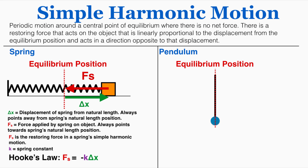In a previous video on elastic potential energy I talked about Hooke's law — I'll link that other video in the description. When describing a spring, delta x is the displacement of the spring from its equilibrium position, and Fs is the force applied by the spring on the object. In the Hooke's law equation, the spring force equals negative k times x — the negative sign is because the force always points in the opposite direction as the displacement from the equilibrium position. In the picture, the displacement is to the right but the force is pulling it back left.